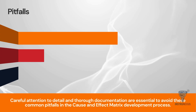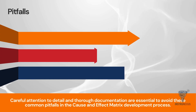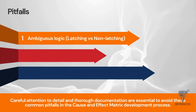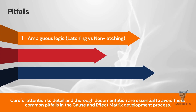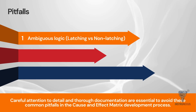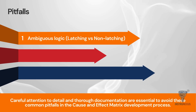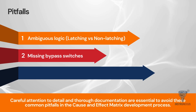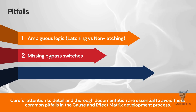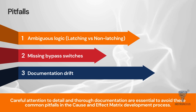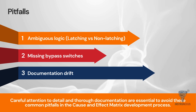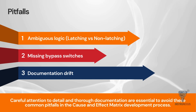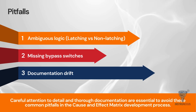Even with a robust process, mistakes happen. The first common pitfall is ambiguous logic — if the matrix doesn't clearly specify whether a trip is latching or non-latching, it can lead to dangerous confusion. Another issue is missing bypass switches. Without maintenance bypasses defined in the matrix, you cannot test instruments without shutting down the whole plant. Finally, beware of documentation drift. If you change the PLC code but don't update the matrix, your blueprint is now wrong. Keeping the documentation synchronised with the field reality is essential for safety.